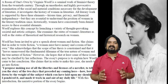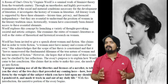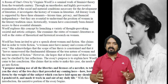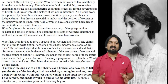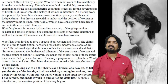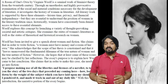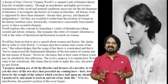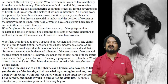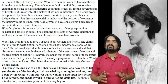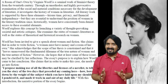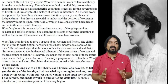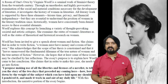Woolf explores this concept by launching a variety of thought-provoking societal and artistic critiques. She examines the status of women's literature as well as the status of theoretical and historical research on women. In the first unit, Woolf has been invited to give a speech about women and fiction. She claims that in order to write fiction, a woman must have money and a room of her own. She acknowledges that the scope of her thesis is constrained and leaves unanswered the fundamental dilemma of the true nature of woman and the true nature of fiction.